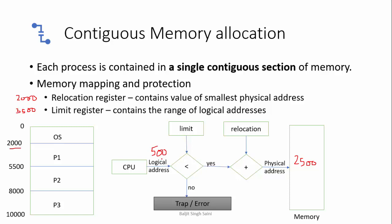If the logical address generated is not less than the limit, this means it will be outside the address space and generate a trap or error. For example, if the logical address is 4500 and we add the relocation 2000, it generates 6500, which is in the range of P2 process, not P1. The logical address has to be less than the limit, then you add it to the relocation register to get the actual physical address.